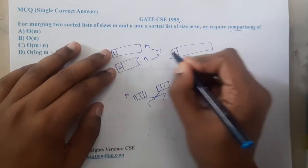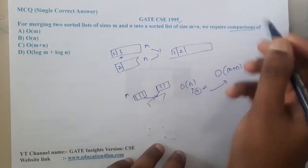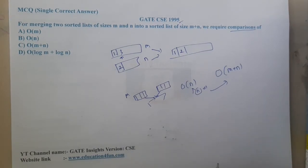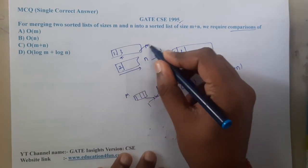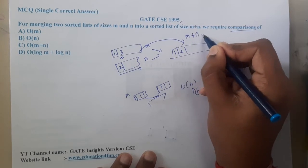Once you are done with one particular array, the last element can be placed automatically. Even in the worst case, you will go up to m+n-1 comparisons because the last element can be placed directly. In total, there will be m+n comparisons.